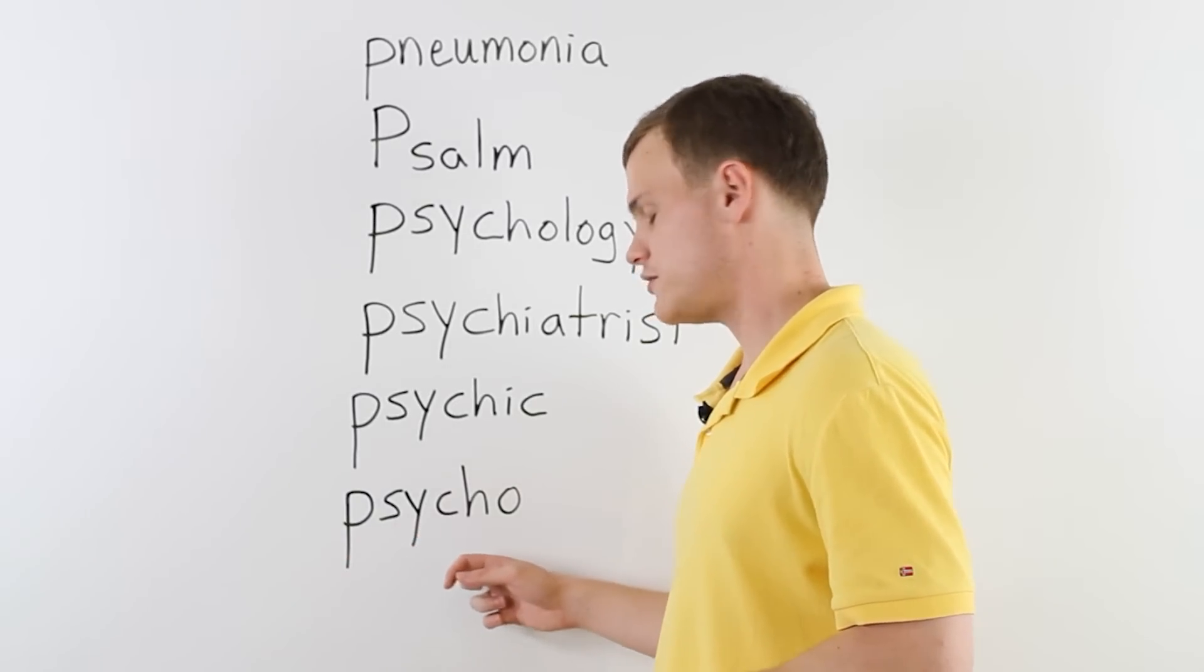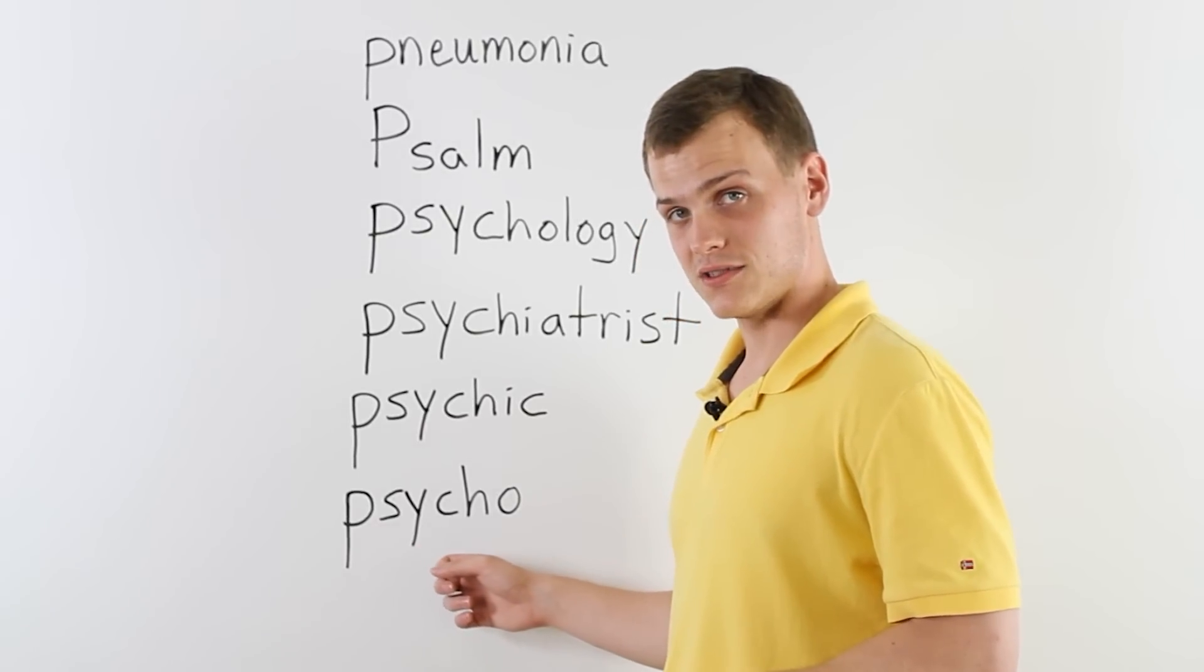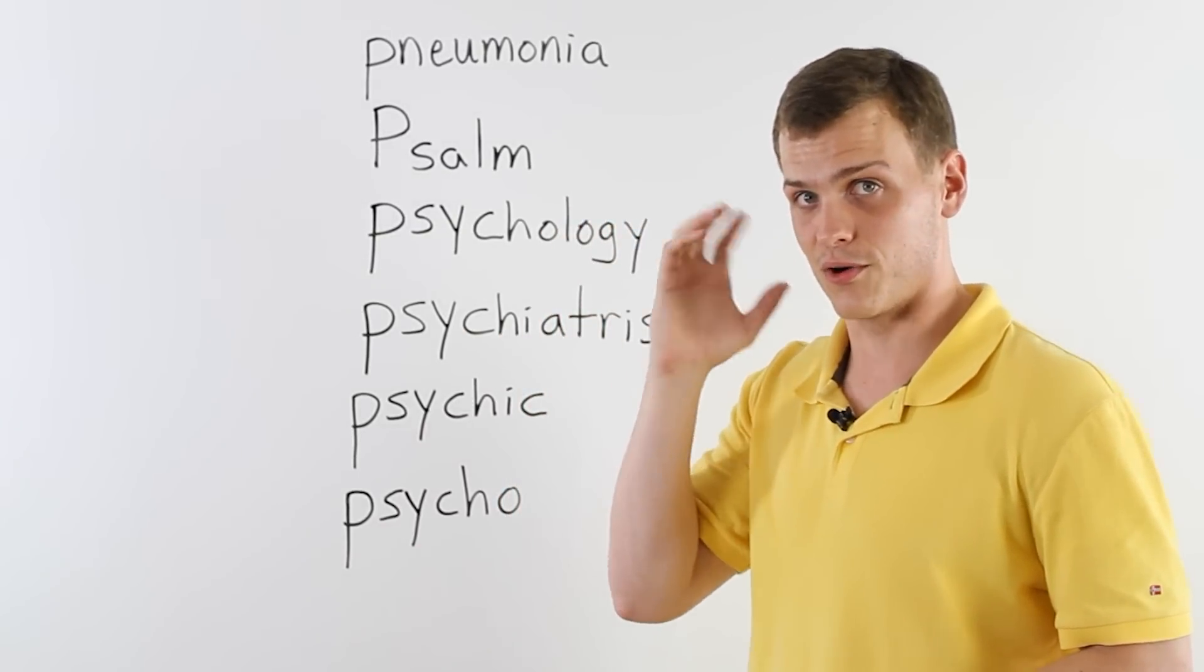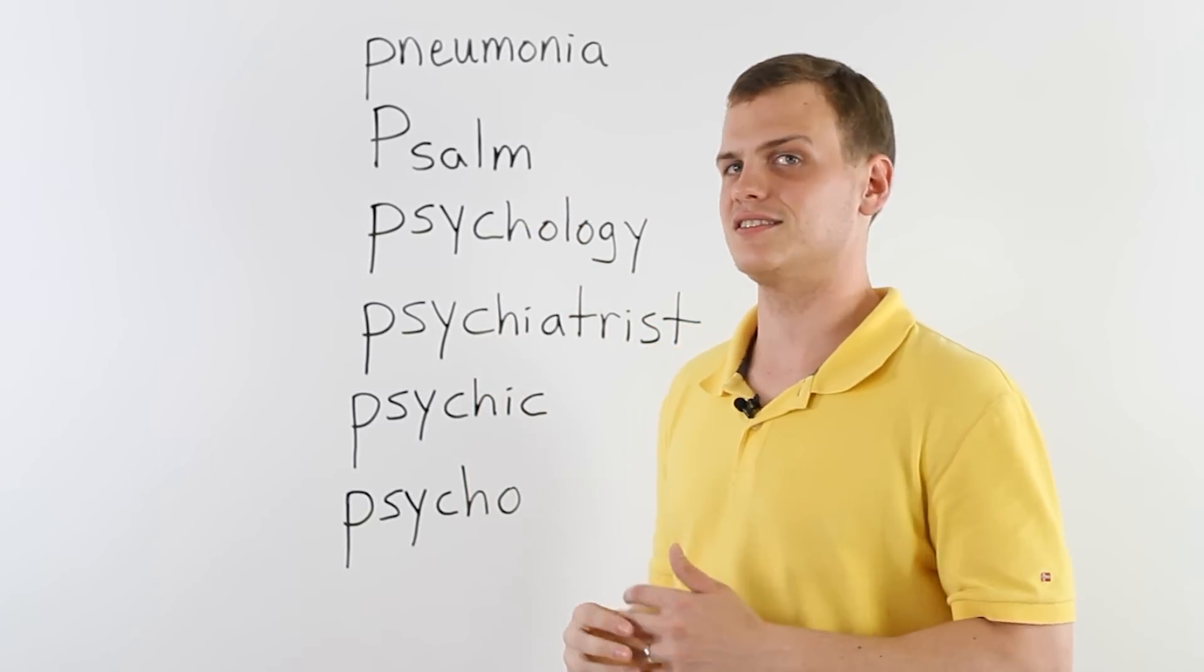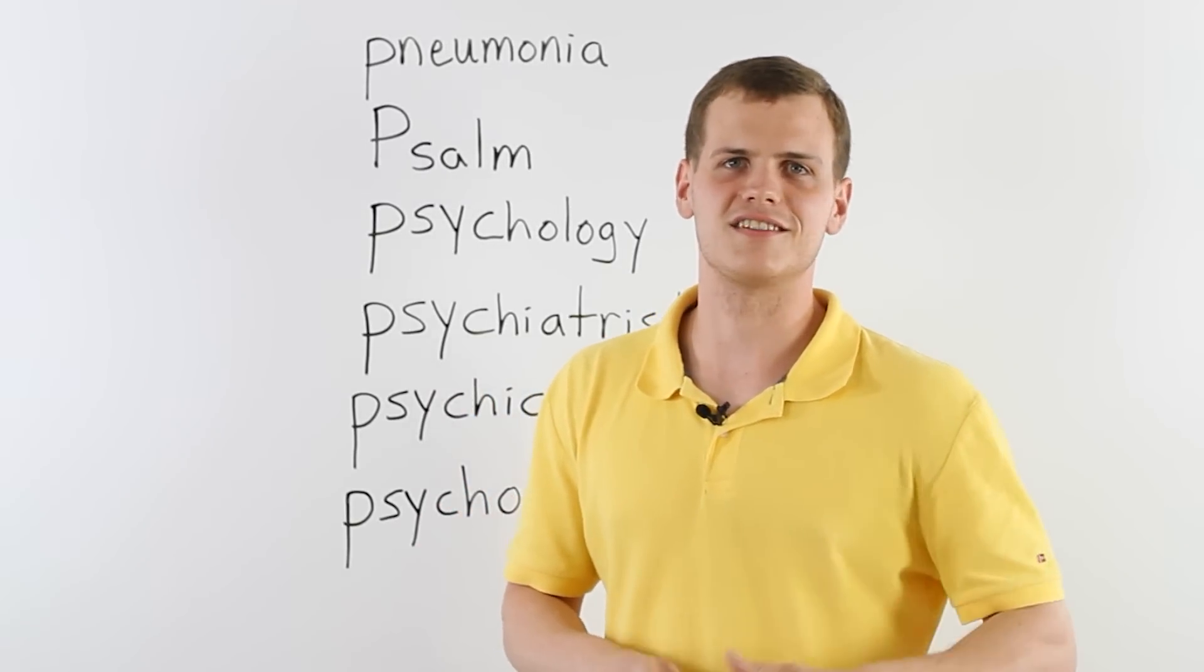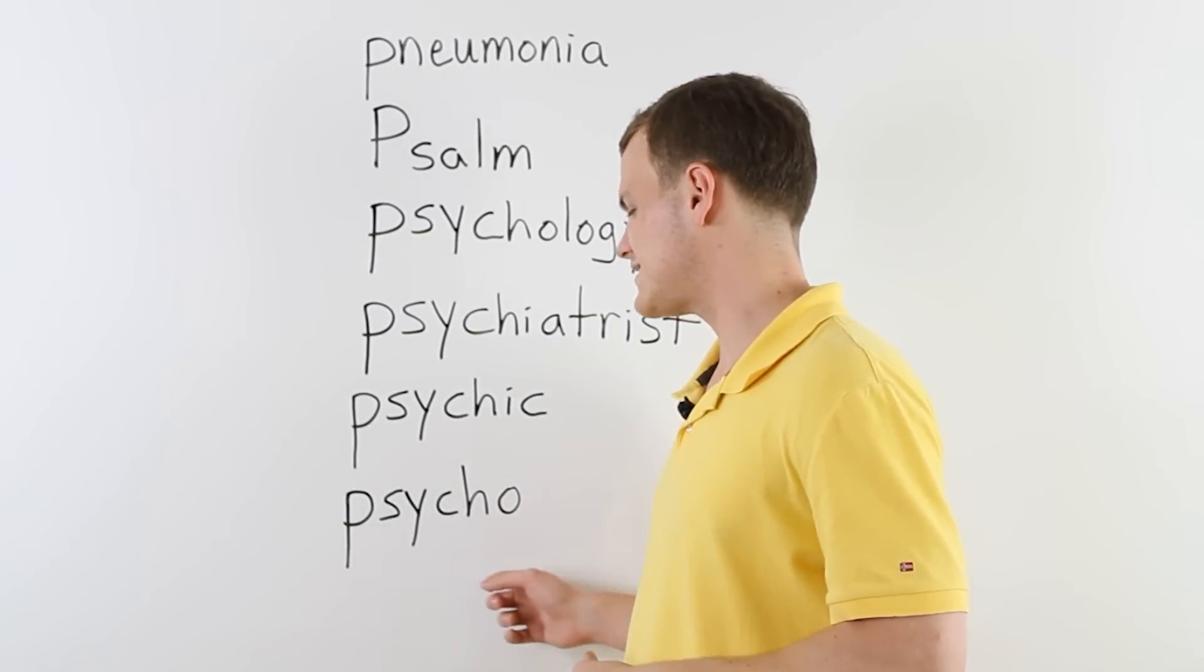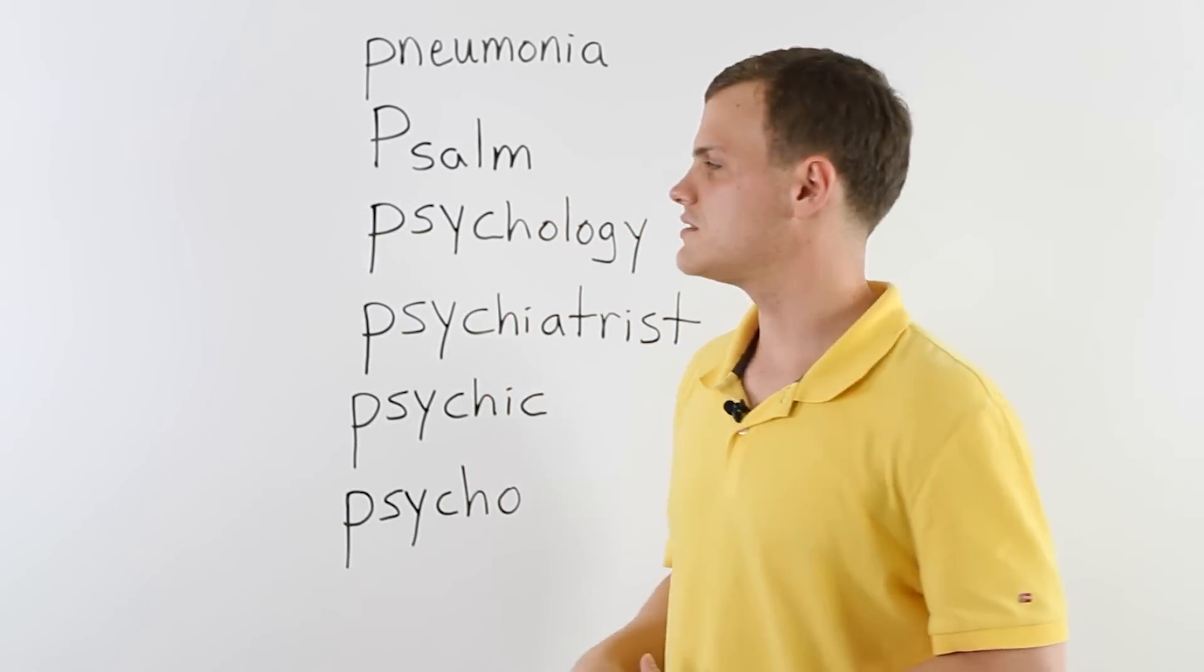And then down here at the bottom, you've probably heard this before, is psycho. This is someone whose mind is a little broken. Maybe they do bad things because of it. Many scary movies have a psycho character in them who's causing problems for other people. So yeah, we have that, the psycho person. It's kind of maybe even a little crazy here.